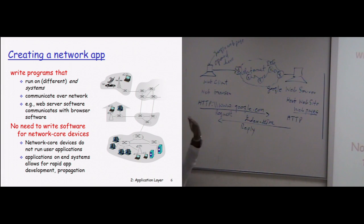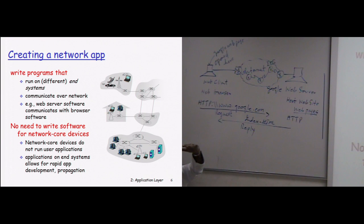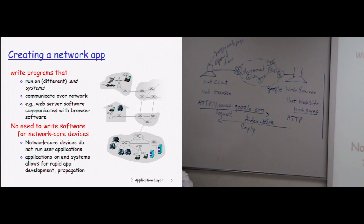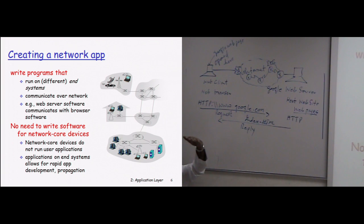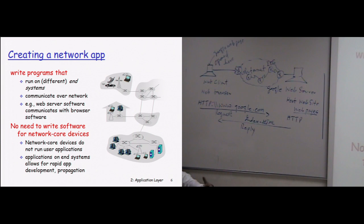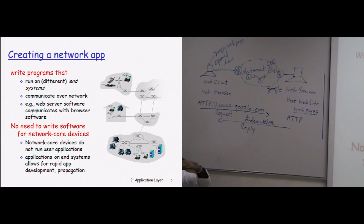A computer operates on all five layers: on the application layer you run many applications; on the transport layer many processes run for these applications, each listening on a different port to differentiate requests and replies for different application programs; on the network layer you assign an IP address to the computer, making it a layer 3 device; and on the data link layer the network card installed in the computer has a hardware MAC address, making it a layer 2 device.